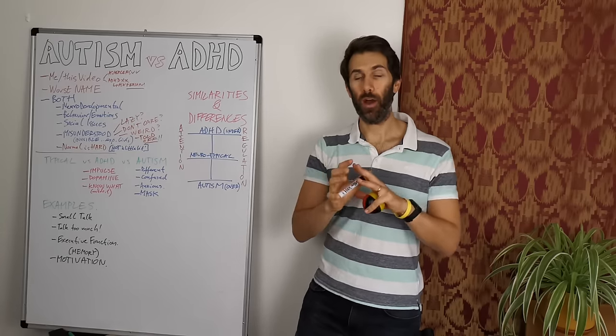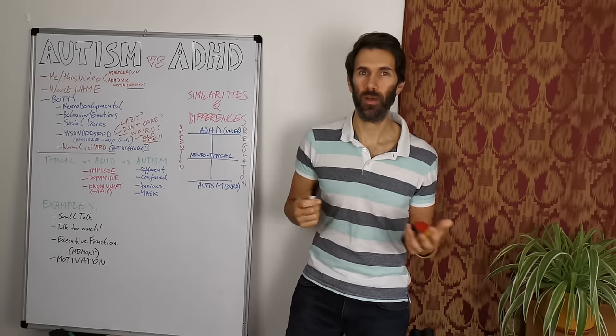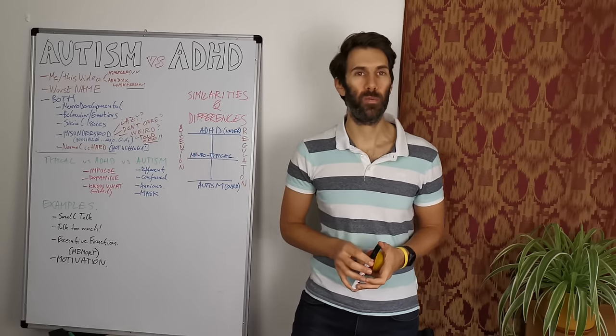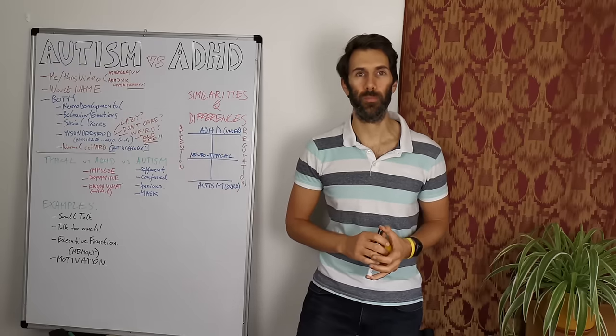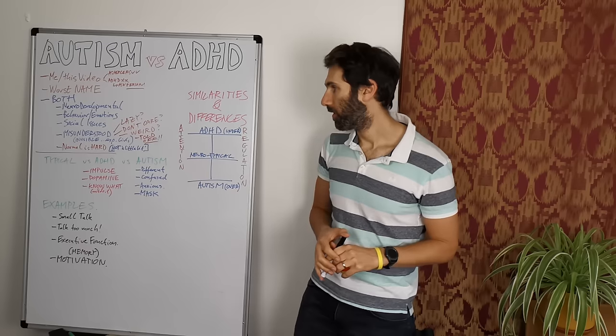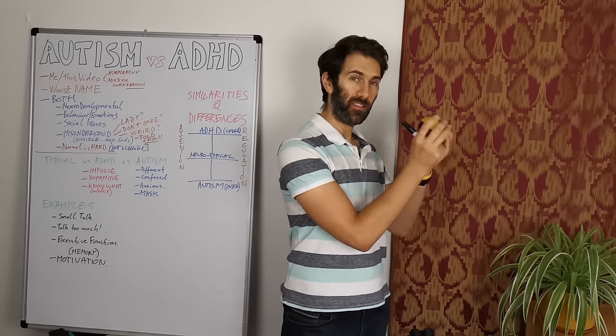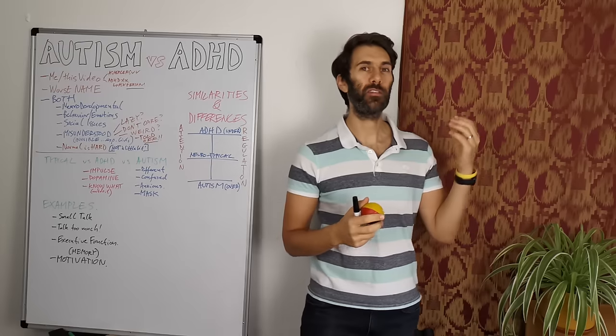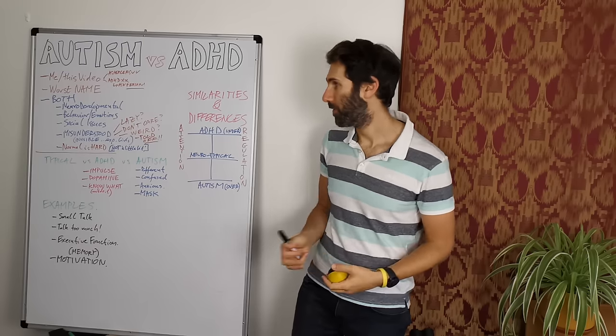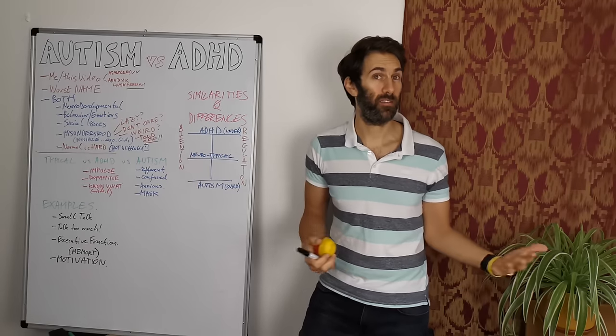Something else that we can all agree on is that you cannot be a little bit autistic any more than you can have a little bit of ADHD. All of the behaviours that I'm going to be talking about in this video, they're all human behaviours. We all do them from time to time, right? Have you ever lost your keys? Have you ever not felt like socialising? Have you ever been overwhelmed by a situation or stressed out by something? Of course you have. They're all human behaviours. And for most people, that's not a big problem.